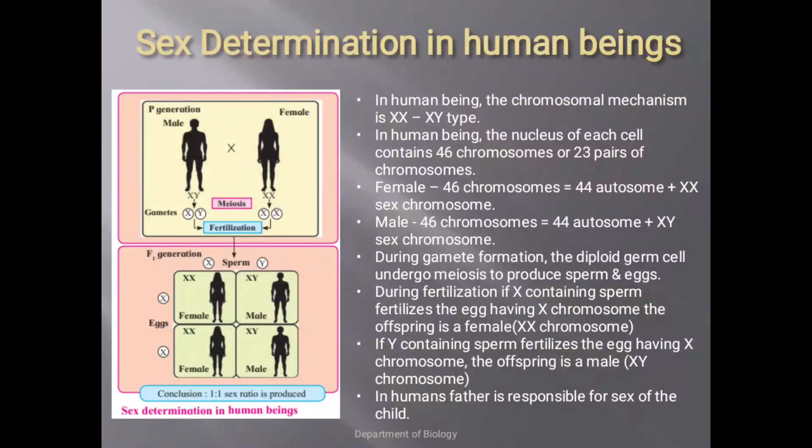Now we are going to discuss the different sex determination mechanisms in human beings, birds, and honeybees. First, sex determination in human beings: in humans the chromosomal mechanism is XX and XY type. The nucleus of each cell contains 46 chromosomes, or 23 pairs of chromosomes.